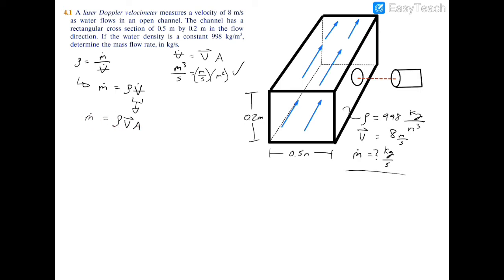We have everything we need to fill in this equation. Mass flow rate equals the density, given as 998 kilograms per meter cubed, times the velocity, which was 8 meters per second.